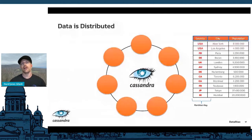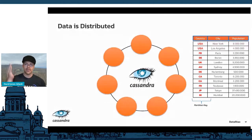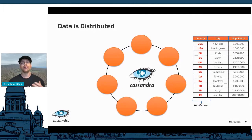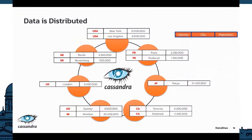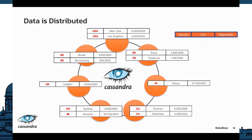Since Cassandra is a distributed database, looking at the table on the right you'll see a column called 'country' labeled as a partition key. As you create your tables and store data, you define a partition key and Cassandra automatically distributes data around your cluster. There are multiple copies, and what's key to understand is that this distribution happens naturally — Cassandra is doing this for you.